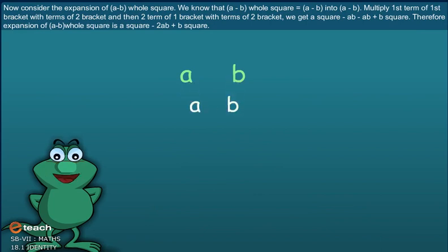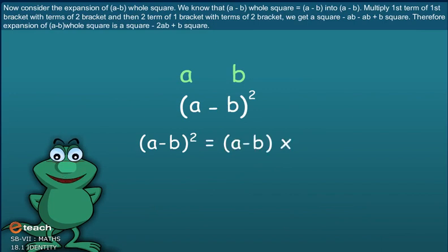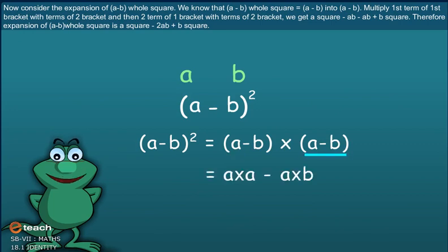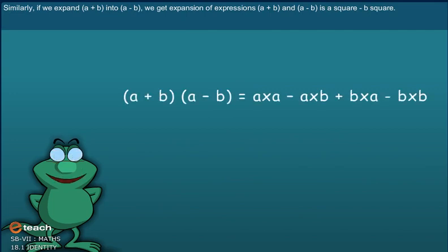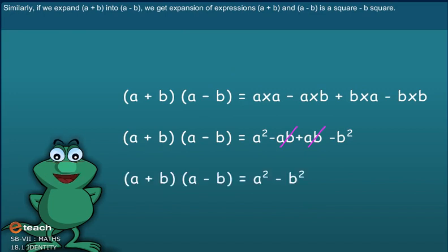Now consider the expansion of A minus B whole square. We know that A minus B whole square is equal to A minus B into A minus B. Multiplying out, we get A square minus AB minus AB plus B square. Therefore, the expansion of A minus B whole square is A square minus 2AB plus B square. Similarly, if we expand A plus B into A minus B, we get A square minus B square.